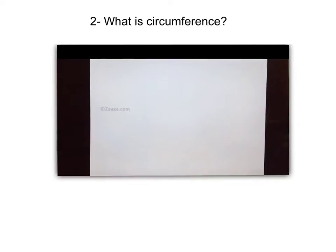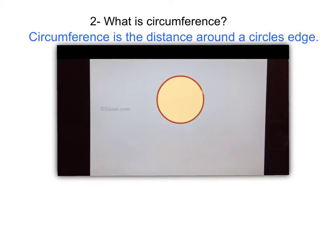Now that we remember our diameter and radius, it's time to talk about circumference. I found a cool visual on a website, so I'll play it while explaining what circumference is. Circumference is the distance around a circle's edge — make sure you write that down in your math notebook. Circumference is the distance around a circle's edge, and we saw that in the video as the line that went all the way around the circle marked in red.